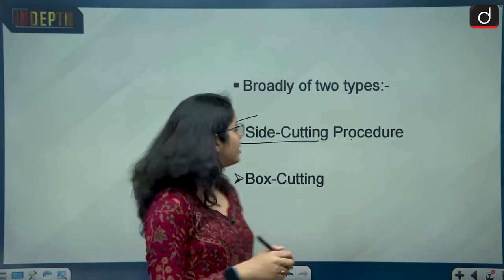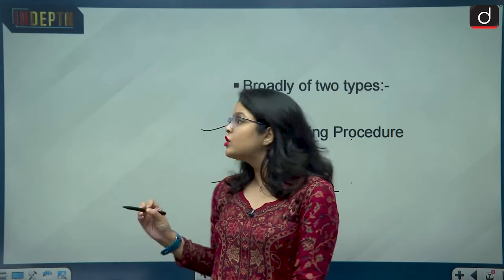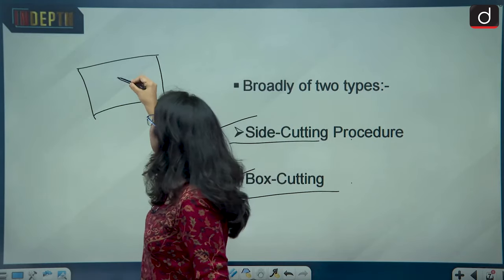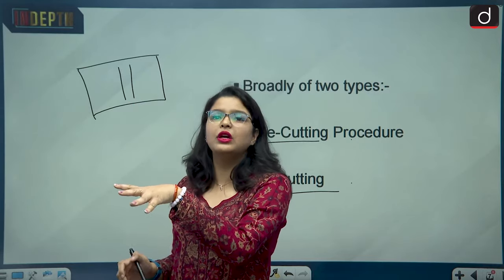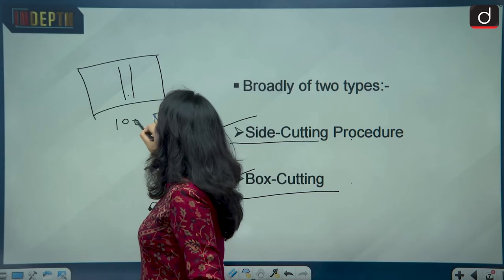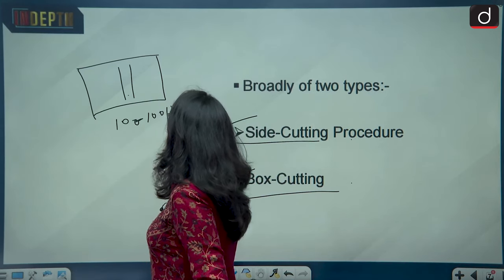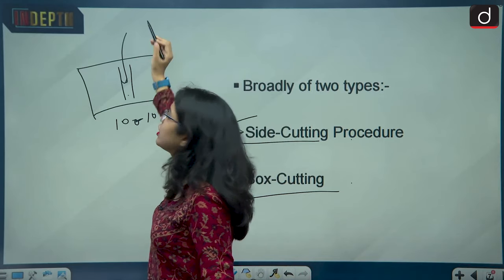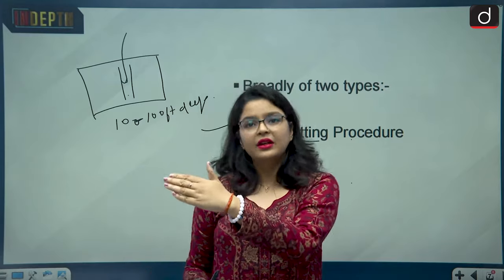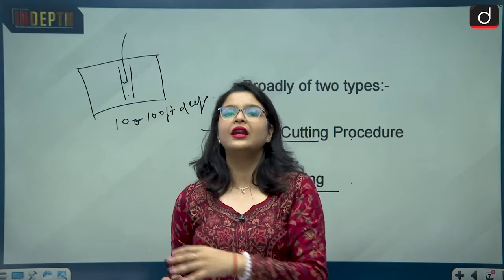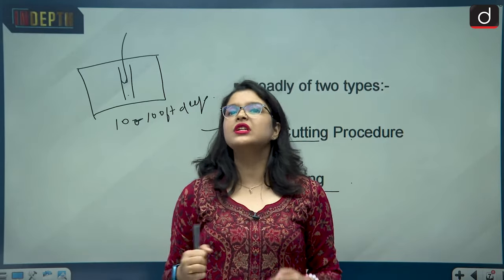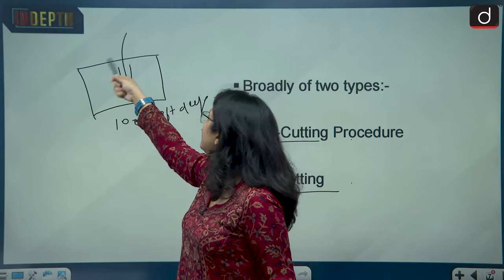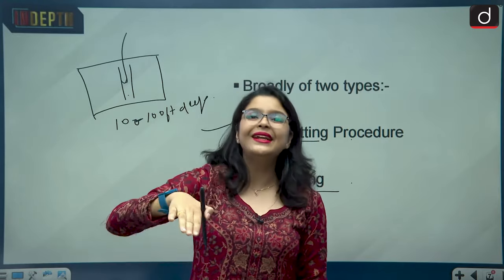The second process is the box cutting rat hole mining technique. In this method, a rectangular box is first formed, and then a pit is dug inside this rectangular box. This pit is usually 10 to 100 feet deep. Workers then vertically descend through this pit, find the coal seam, and extract coal from there. The key difference is that in box cutting, you first dig a rectangular hole and then dig the vertical pit inside that rectangular hole.